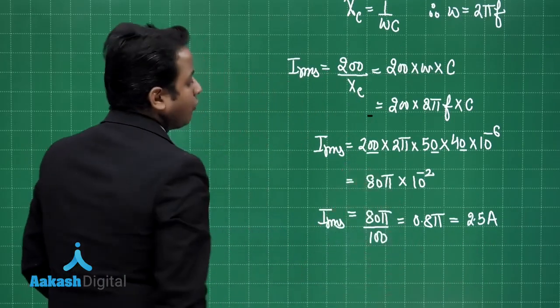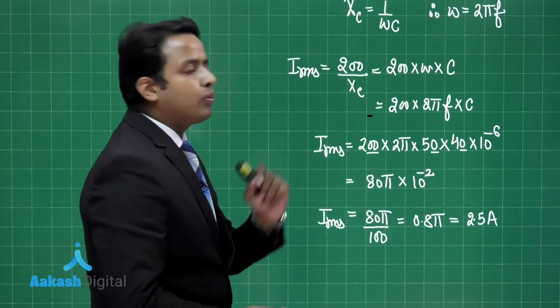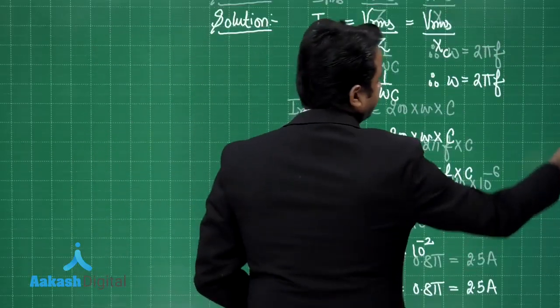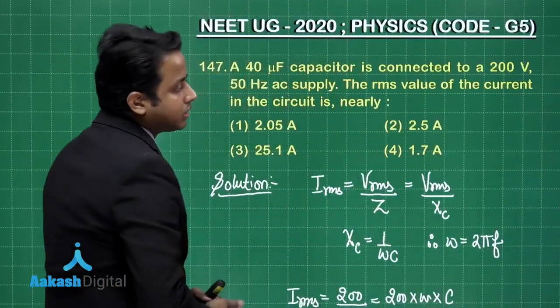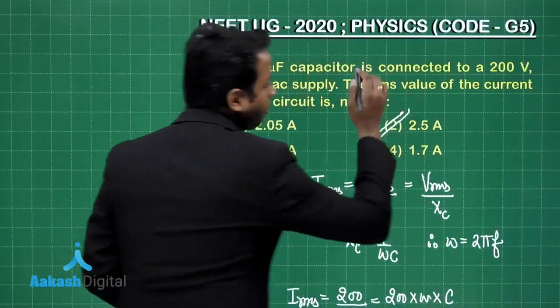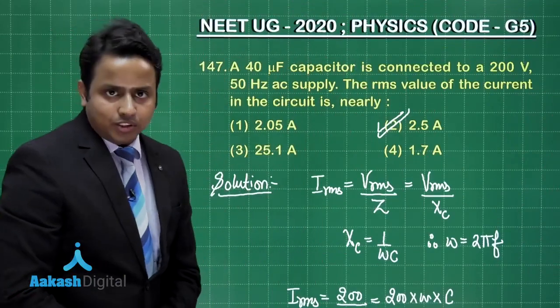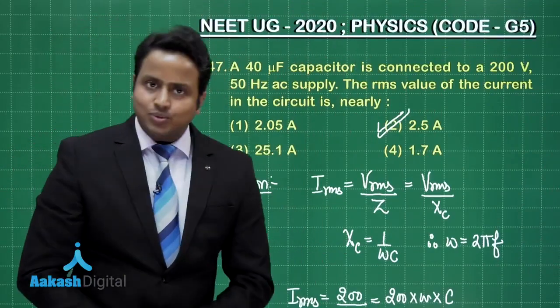So, RMS current flowing in the circuit will be 2.5 ampere. So, out of the given options option number 2 will be the right choice for this question. So, let us move to the next question.